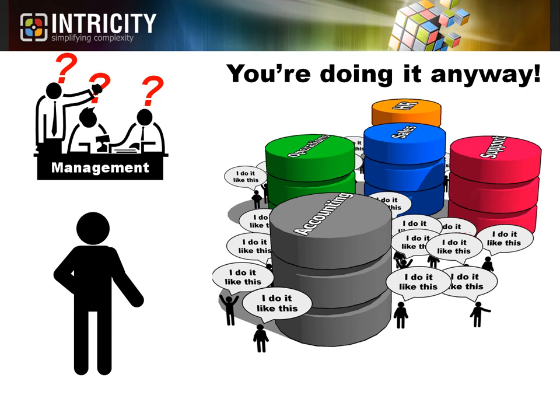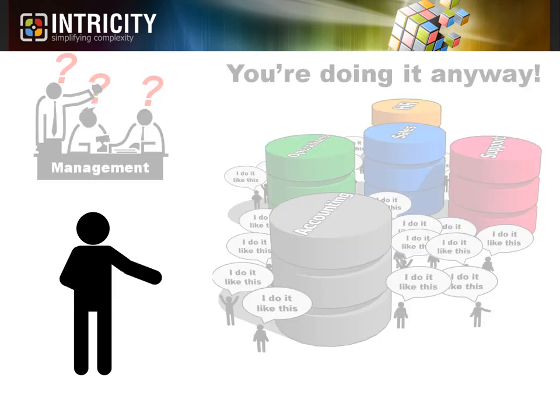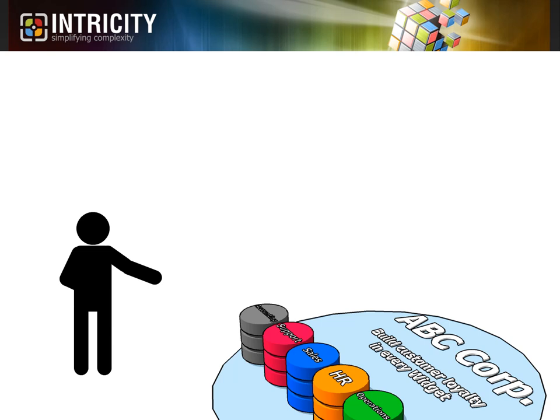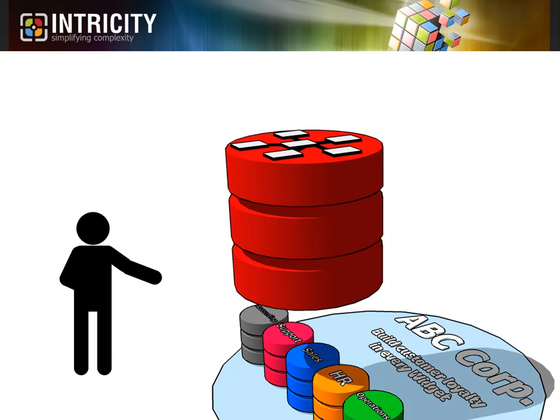So you can start to see that a data warehouse is really a way for the organization to accurately identify itself. Not as a series of independent silos, but more as a cohesive operation. Additionally, you'll notice that data warehouses have centralized logic, which reduces the need for manual data integration.